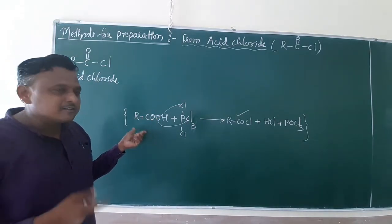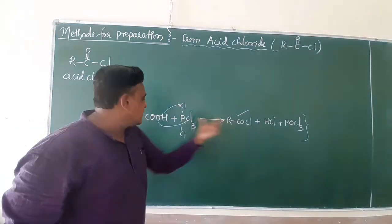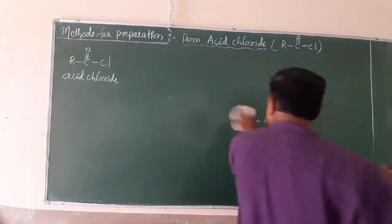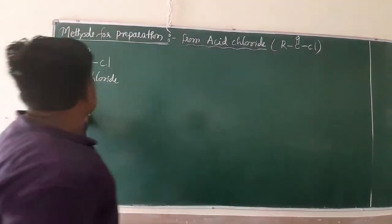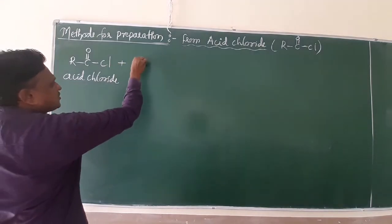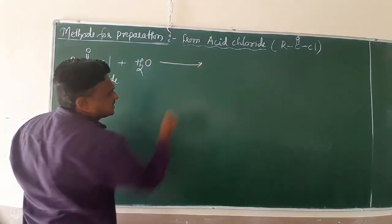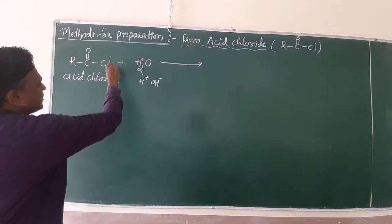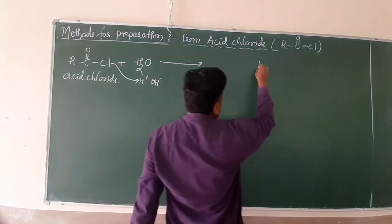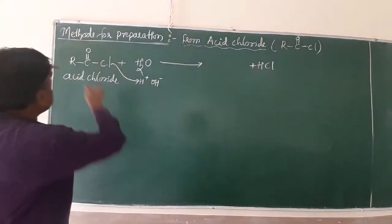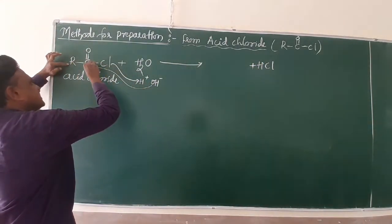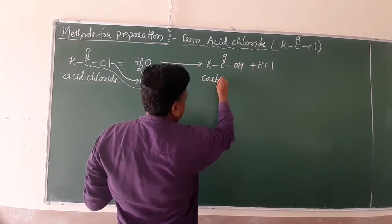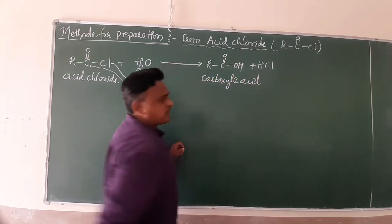Today we have the reverse of this reaction — by using acid chloride we prepare carboxylic acid. This is our today's target. When acid chloride undergoes hydrolysis in acidic medium with H⁺ and OH⁻, the halogen combines with H to release HCl, and the OH attacks the carbonyl, giving R-C(=O)-OH, which is carboxylic acid. It is a very simple reaction.